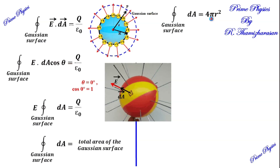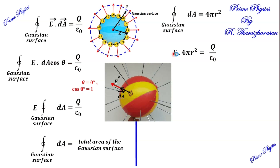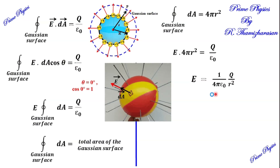Substituting into the Gauss's law equation, we get E equal to (1/4πε₀)(Q/r²). This is the formula for the electric field at a point outside the sphere. This is the scalar form. We also have the corresponding vector form.